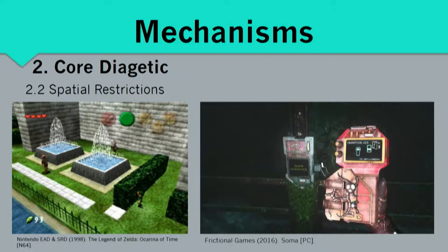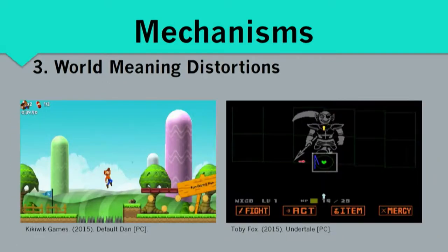Then there are spatial restrictions, which can be something like guards that you have to avoid — their field of vision is a moving spatial restriction that limits your path. Or stuff like in Soma, where you have to use the Omni tool to open doors, but you have to upload the right stuff onto it first. Then there are world meaning distortions — an interesting example is Default Dan on the left, which basically functions like any other Super Mario side-scrolling platformer, but every element you know from other platformers, like coins or spikes, actually has the opposite meaning of what you're used to.